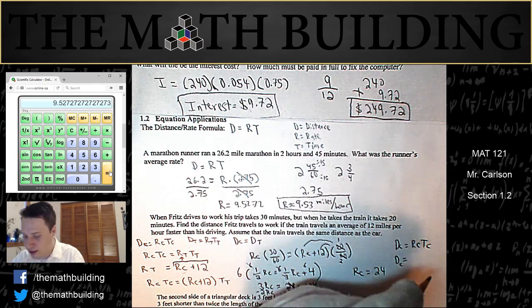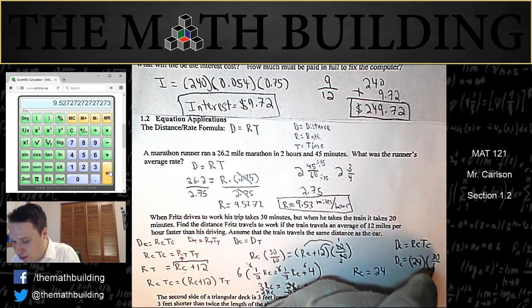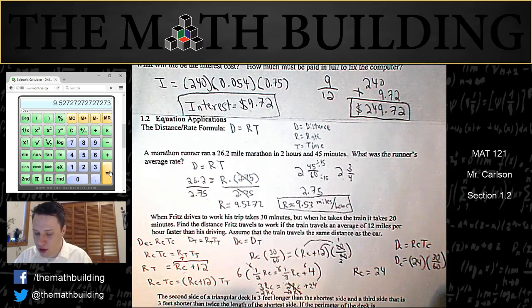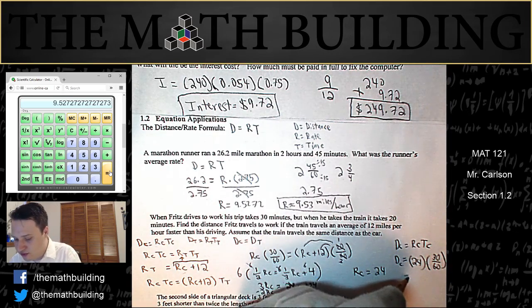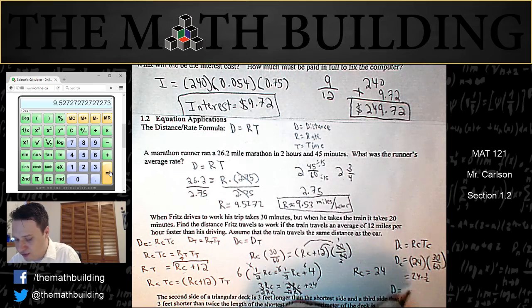because I know distance equals rate times time, the distance is going to equal, and we figured out our rate was 24 and our time was 30 over 60 just like before which as you know that reduces to a half, so it's 24 times a half and so the distance is equal to 12 miles.